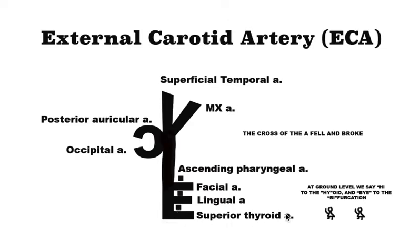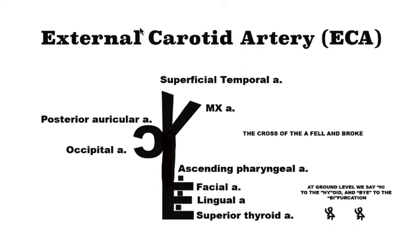Using the mnemonic — we say 'hi' to the hyoid and 'bi' to the bifurcation — we know that the carotid body is just near the bifurcation. So if we put our stethoscope maybe just below the hyoid, or at the superior border of the thyroid cartilage region, we should basically be on the carotid body. So that's about it.